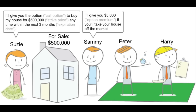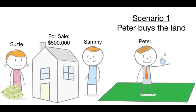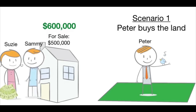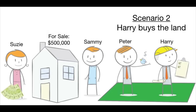If Sammy does elect to buy the house — or exercise the option — Susie still gets to keep the $5,000 and he pays her $500,000 for the house. Now, three things could happen in this story. In scenario one, Peter buys the nearby parcel of land, which will increase the value of Susie's home to say $600,000, in which case Sammy will be very happy to exercise his option to buy the house for $500,000.